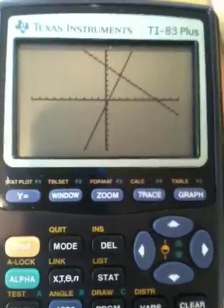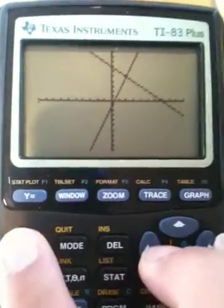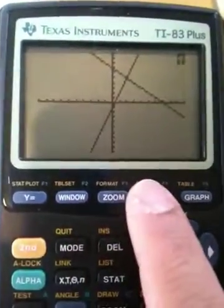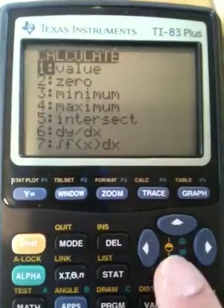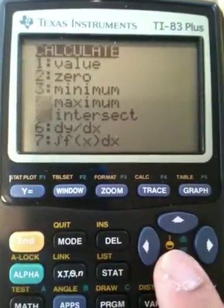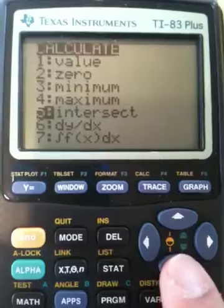But a much faster, easier way to do this is to click on second, calc, and go down to intersect. You can either click the arrow going down or press number 5, hit enter.